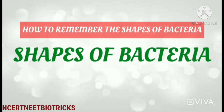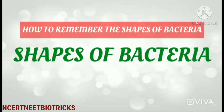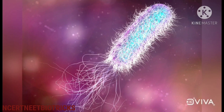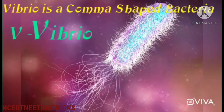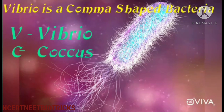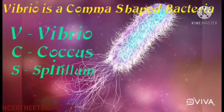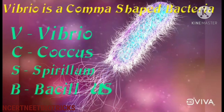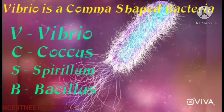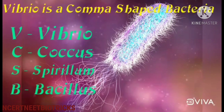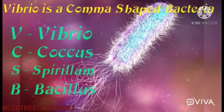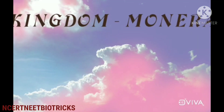Next, we will see how to remember the shapes of bacteria. Vibrio is a comma-shaped bacteria. V stands for Vibrio, C for Coccus, S for Spirillum, and B for Bacillus.